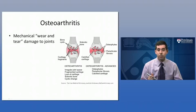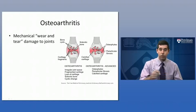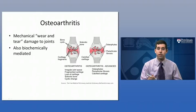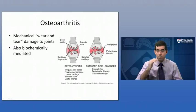For osteoarthritis, it's mostly a mechanical wear and tear type of damage to joints. Over time and with weight support on particular joints, we end up with essentially some mechanical destruction, in particular of the articular cartilage. It is also biochemically mediated — there is some inflammation that occurs because of that damage to the joint, bringing in some of those immune cells like we saw in rheumatoid arthritis that can release biochemical mediators, some enzymes that can cause additional destruction. But usually with osteoarthritis, we say it is mechanically initiated but biochemically prolonged or mediated after that.